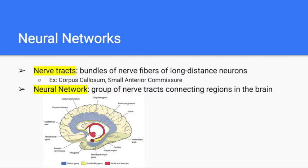A neural network is a group of nerve tracts connecting regions of the brain. For example, say you're watching TV. The photoreceptors in your eyes convert the wavelengths of light into electrical signals, which then travel through your optic nerve into your thalamus, onto your primary visual cortex. From there, the electrical signals go into two streams: one to the temporal lobe for recognizing objects, and two to the parietal lobe to detect spatial location. That's an example of a neural network because it connects various regions of the brain.